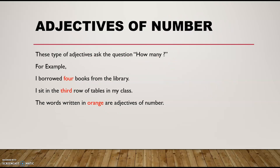Now let's see the adjectives of number. These types of adjectives ask the question: how many? For example, 'I borrowed two books from the library.' And 'I sit in the third row of tables in my class.' The words written in orange are adjectives of number. How many books did you borrow? Two. How many rows of tables are you sitting in? The third.